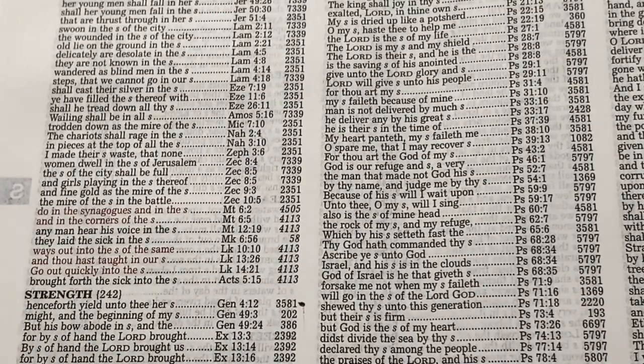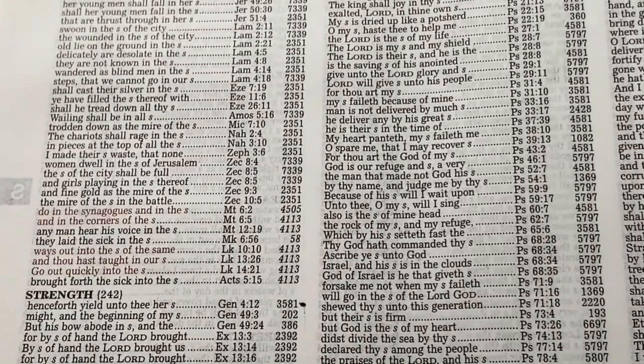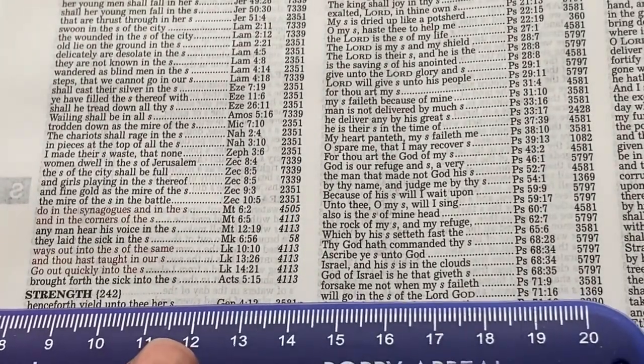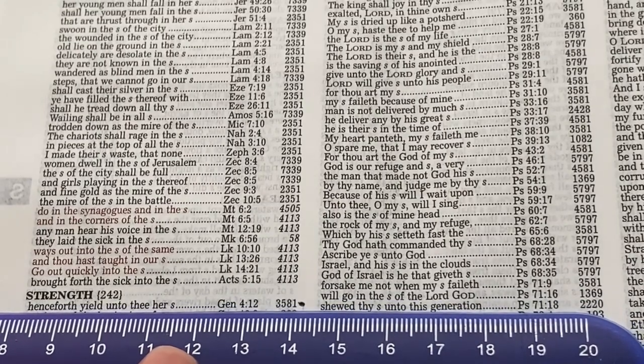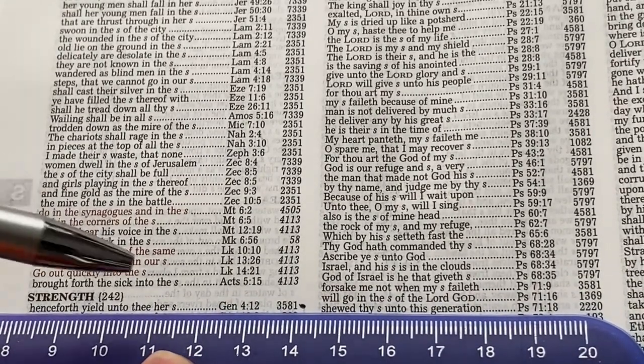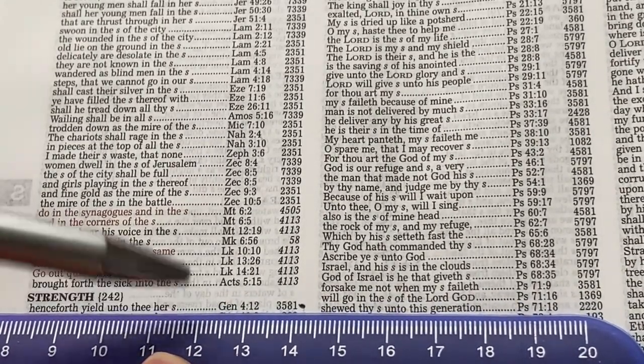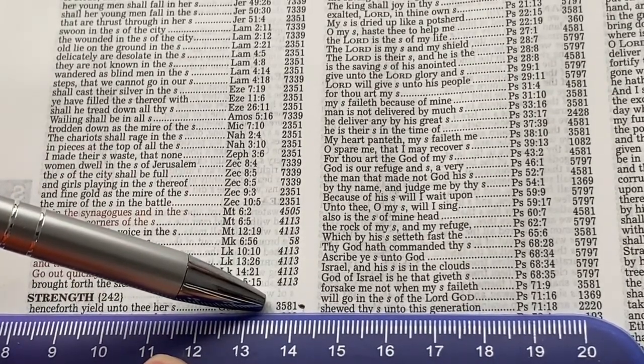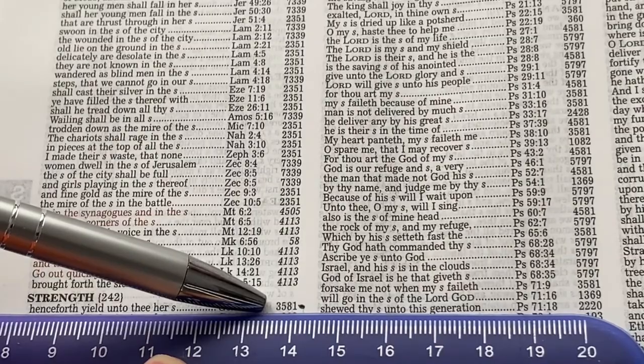And here is a part of the verse, Hebrews 4:12. Henceforth yield unto thee her strength. So then you've got, let me get my ruler. You've got Genesis chapter 4 verse 12. And then you've got the Strong's Reference number, which is 3581.